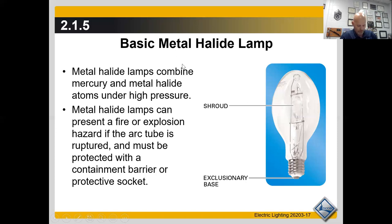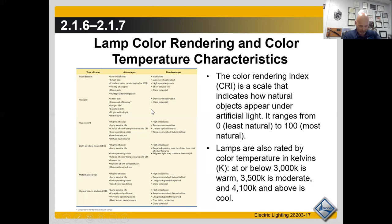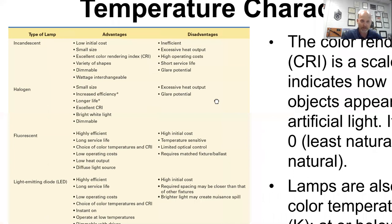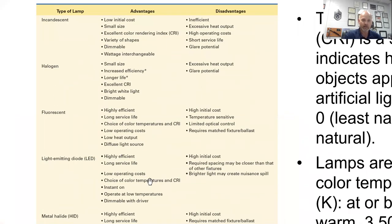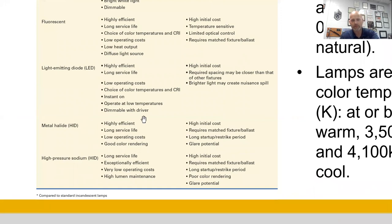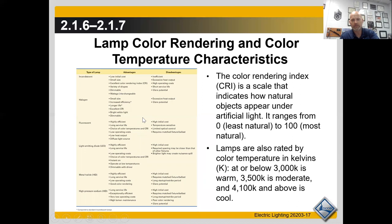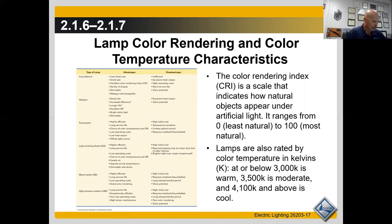The CRI is a scale that indicates how natural objects appear under artificial light. Lamps are also rated by color temperature in Kelvins — 3,500 Kelvins is moderate, balancing warmth and coolness. Your book provides the advantages and disadvantages of each type of lamp, so please take the opportunity to look that over.